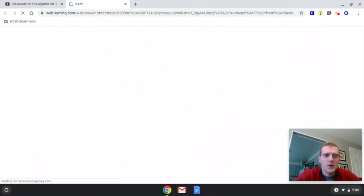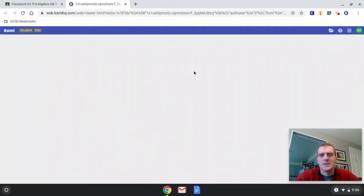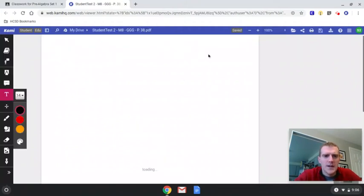Once you do that you'll see your version of the document in Kami. Make sure whenever you're doing your work like this you're putting in all the necessary steps or explanations that way your teacher can see everything that they're looking for like it would be on a normal piece of paper. So here is the document, it's loading.